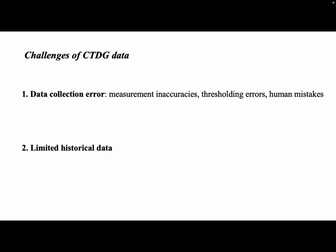However, there are some challenges with CTDG data. First, the observed CTDG data often falls far short of accurately representing the true underlying process it intends to model, mainly due to various factors such as measurement errors, thresholding errors, or human mistakes. Secondly, most CTDG models typically rely on extensive historical data for training, but in many applications, obtaining such data is impractical.